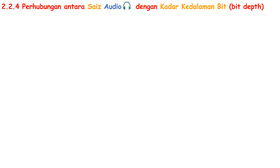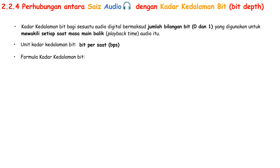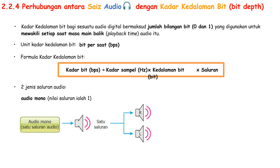Let us now move on to audio digital. Kada kedalaman bit for audio digital means the total number of bits — 0 and 1 — used to represent each second of the audio's playback time. The unit for kada kedalaman bit is bit per saat, bps. The formula is: kada bit equals kadar sample times kedalaman bit times saloran. There are two types of saloran audio. First, audio mono — nilai saloran is 1. With this type, sound comes from the same channel, so both left and right ears hear the same sound.